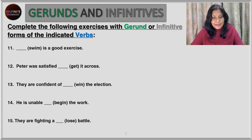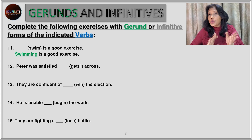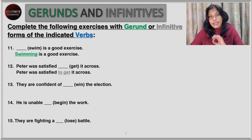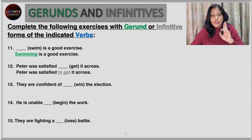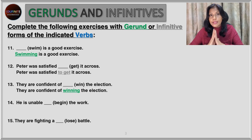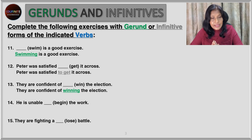The answers: Swimming is a good exercise. As I told you before, the subject position always takes the gerund form, so it's 'swimming' and not 'to swim'. Next: Peter was satisfied to get it across. Again, '-ed' — after '-ed' we use the infinitive form — 'to get', not 'getting' it across. Next: they are confident of winning the election. This is the object of the preposition 'of', and the object of a preposition is always a gerund, so we use the gerund form.